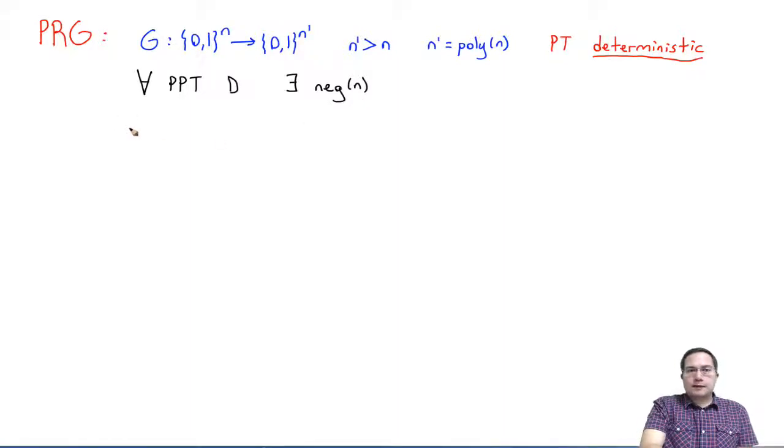What's the probabilistic experiment? In the first experiment, we will pick a random seed S from the domain of G, so from n-bit values. And then, what we are going to do is we will compute R, which is G of S. So we run G on this random seed S. It will give us back some value R.